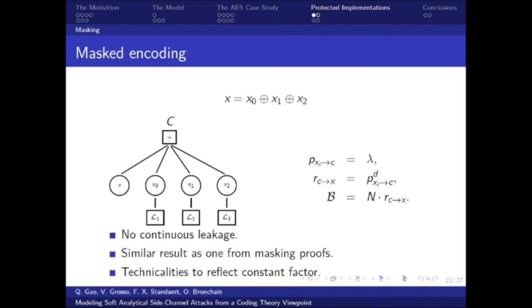Of course, there is some constant factor on the proof, and we discuss some technicalities to reflect that in the paper. Finally, we can estimate the information bound from the encoding for several observations for n observations just by multiplying by n. That is for masking encoding. Finally, we can also do one remark that now in masking case, as opposite to unprotected case, we don't have continuous leakage, we just have one trace per execution.